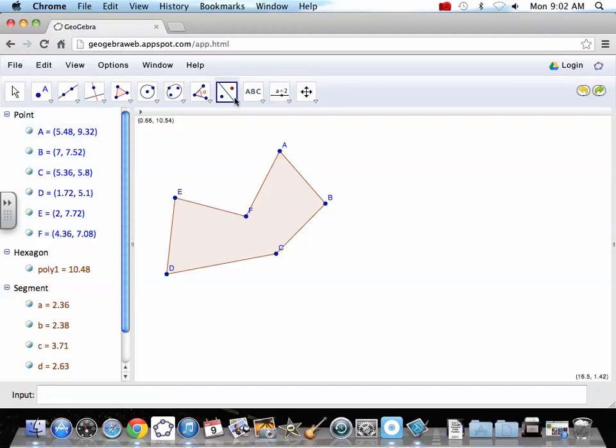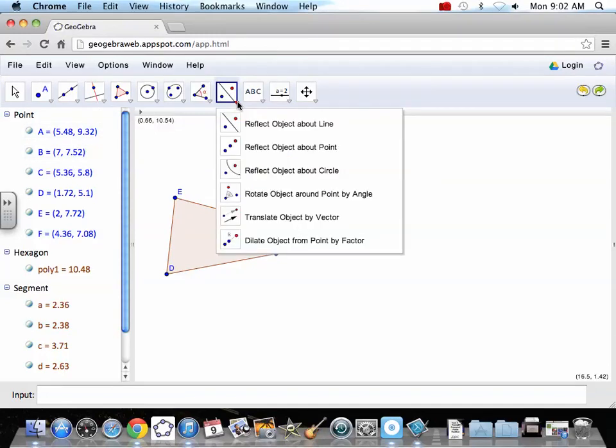We want to do a reflection. We're going to reflect about a line, not a point, not a circle. Things you could do, but we tend not to. About a line.